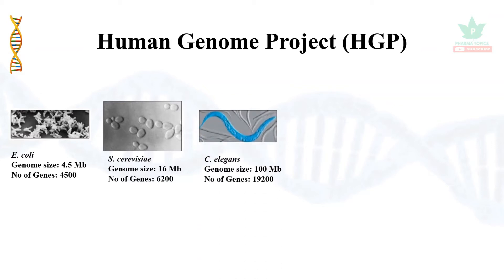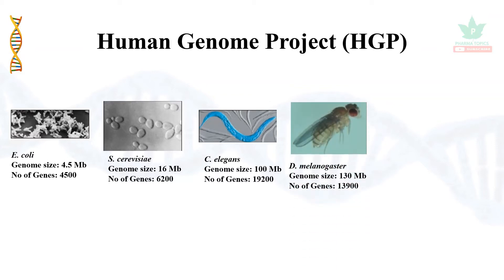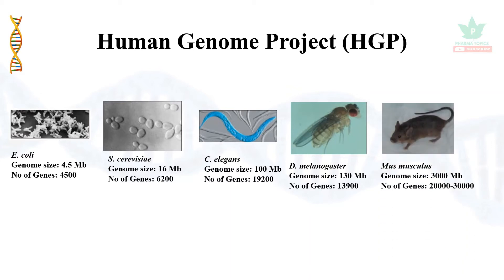C. elegans has a genome size of 100 MB with 19,200 genes. Drosophila melanogaster, or fruit fly, has a 130 MB genome with 13,900 genes. Mus musculus is used for human research. Its genome is 3,000 MB with a number of genes equal to humans. That is why we use this animal in trials to analyze the number of genes and genomic tools.